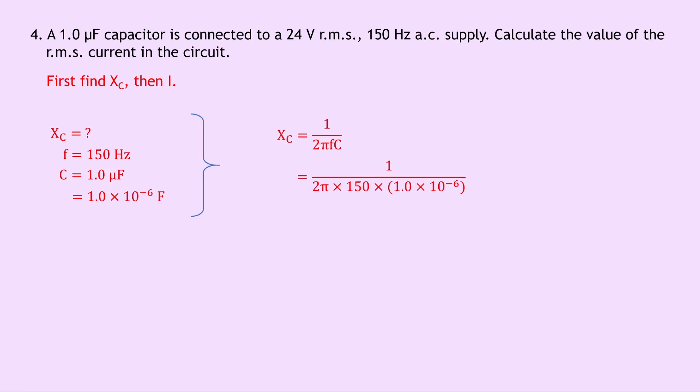Substituting in the numbers, we get 1 over 2 pi times 150 times 1.0 times 10 to the minus 6. And putting this into your calculator should give you an answer of 1061 ohms.